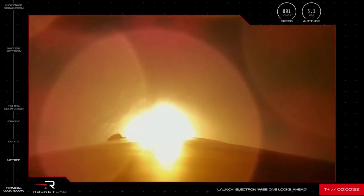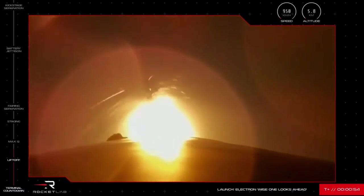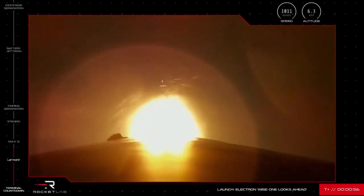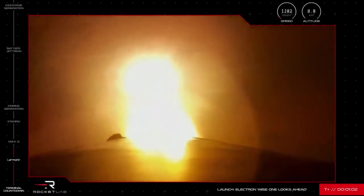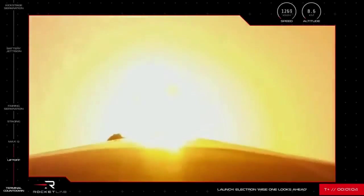Before it gets there, it has a number of critical milestones to pass through, the first of which is called Max-Q. Max-Q is the first test in Electron's journey where it experiences maximum aerodynamic pressure, or where the forces on the rocket are at their peak.